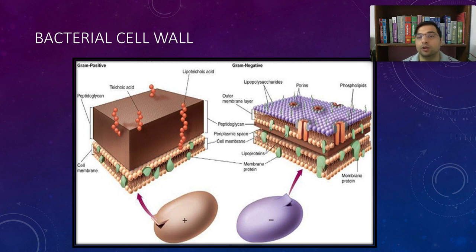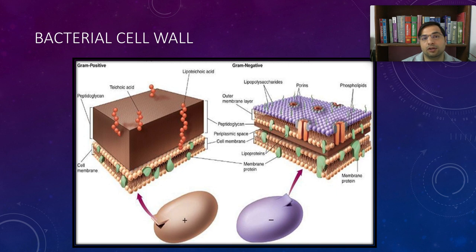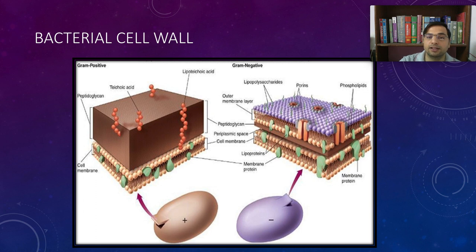That is why gram negative bacteria are more dangerous. You can remember that gram negative stains red, and red is for danger. Gram negative bacteria are more dangerous even after the bacteria is dead — the endotoxins in the outer membrane of gram negative cells are released into the blood even after death by antibiotics, causing endotoxic shock or septic shock.